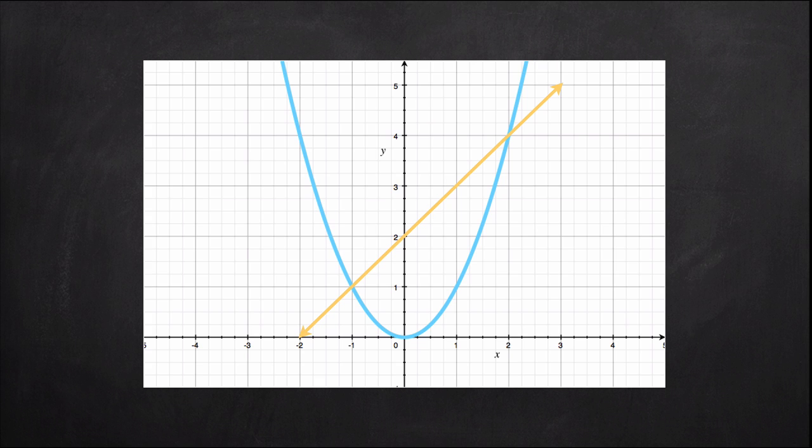To see how the secant line becomes a tangent line, we'll call the secant line's points of intersection P and Q, and then draw the tangent line at the point P.